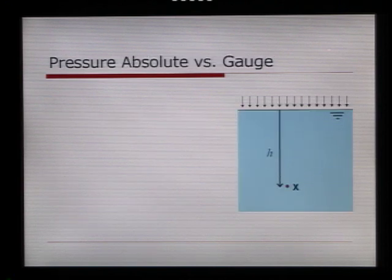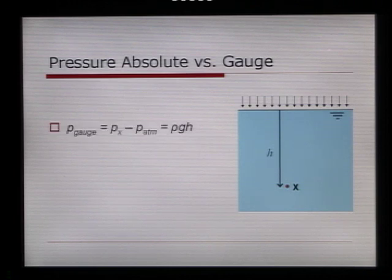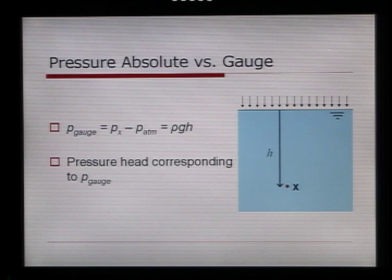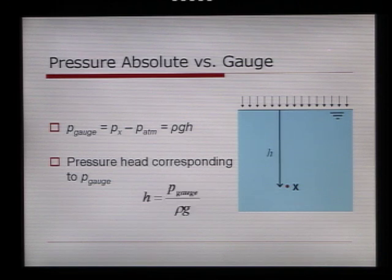So, how does that equate to gauge pressure? The gauge pressure is equal to the pressure at point X minus the atmospheric pressure, which is equal to rho g h. Pressure head corresponding to the pressure at that point, or the gauge pressure. H can be written as the gauge pressure divided by the density and the gravity.